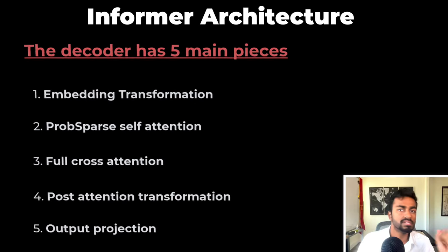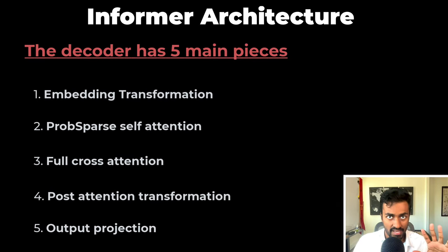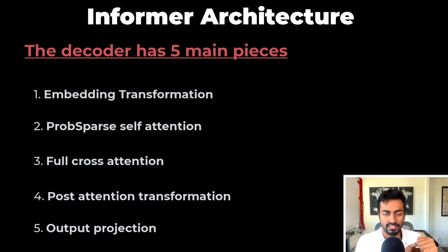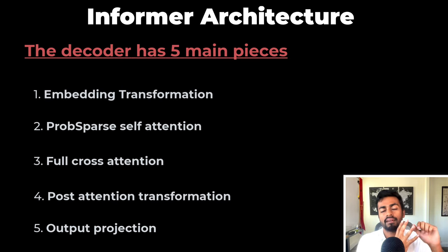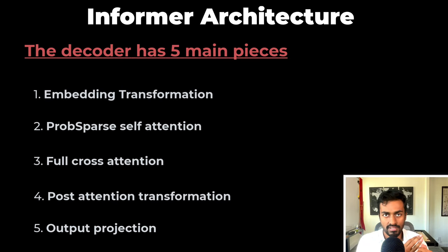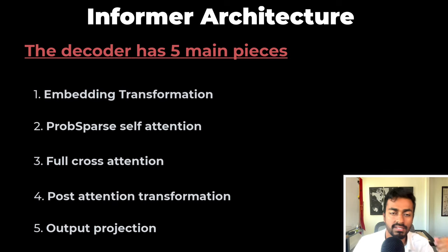The decoder is going to have five main pieces: embedding transformation, prob sparse self-attention, full cross-attention, post-attention transformations, and an output projection. Let's discuss each of these in the decoder.